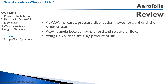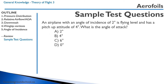Let's review. As angle of attack increases, the pressure distribution moves forward until the point of stall. Angle of attack is the angle between the wing cord and the relative airflow. The wingtip vortices are a byproduct of lift. Here's a question: an airplane with an angle of incidence of 2 degrees is flying level and has a pitch-up attitude of 4 degrees — what is the angle of attack? You may want to draw this out.